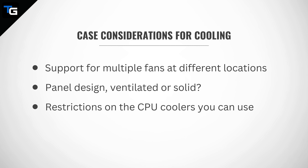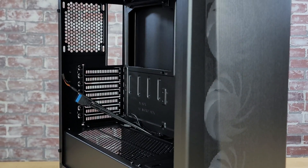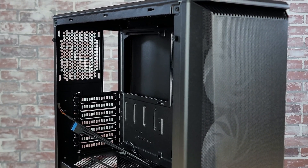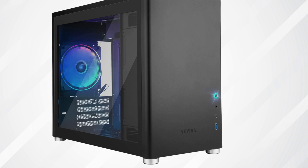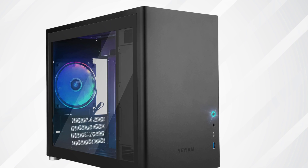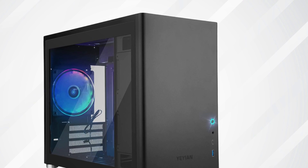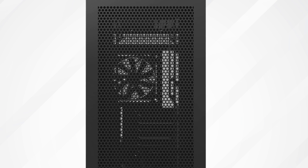The second thing to consider is the design of the case's panels, as they will play a large role in airflow. Cases that have grilled or mesh panels are ideal because the open design allows more airflow into and out of the case. On the flip side, cases with solid panels restrict airflow because there is less of an opening for air to get in or exit. So when possible, try and choose a case with grilled or mesh panels, especially on the front, as that will increase airflow into your case and in turn keep your components cooler.